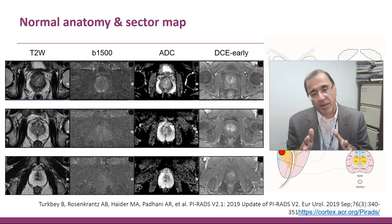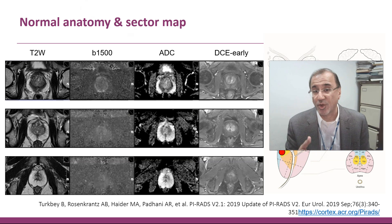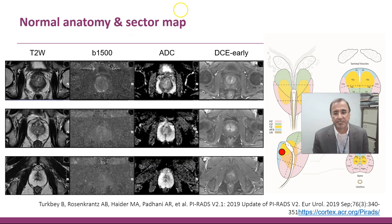These anatomical structures are best seen on the T2 sequence. On other images of the multiparametric MRI you may not be able to see all these tissues. You can tell the difference between the peripheral zone, central zone, and transition zone on an ADC map, but you don't see the same differentiation on the high B-value images.